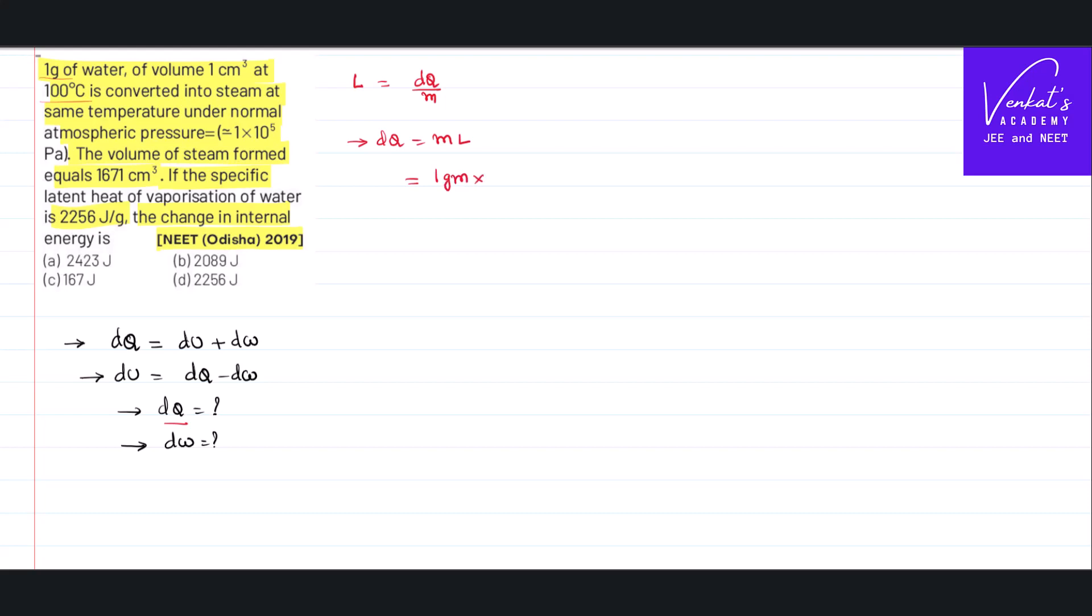And latent heat is given as this value: 2,256. Look at the units carefully. Joule per gram is given for you. So this gram and this gram will cancel. 2,256 joules itself is the answer. I need not make any conversion here actually. I got dQ.